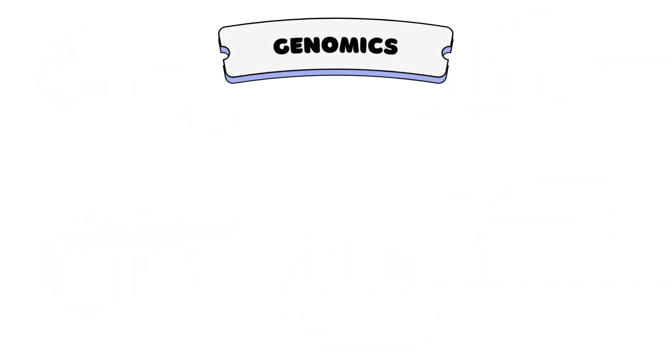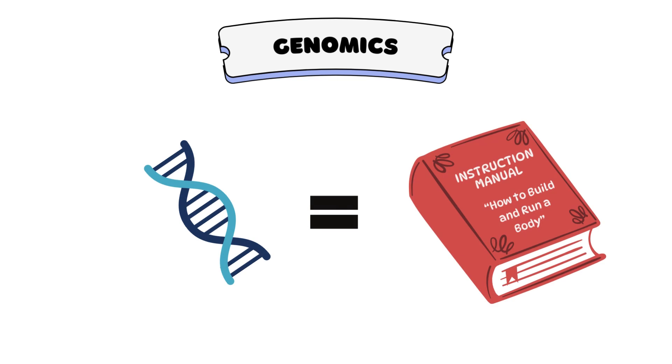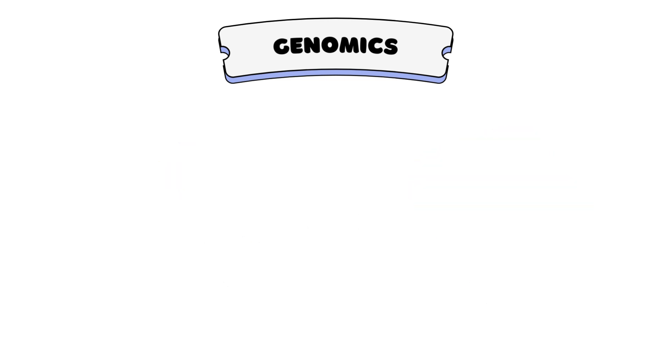Let's start at the root of all biological information: DNA. Think of an organism's DNA as a giant instruction manual for building and running their body. The genetic code is made up of four nucleotide bases: